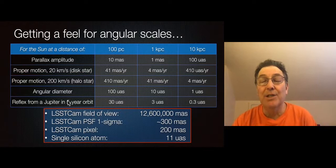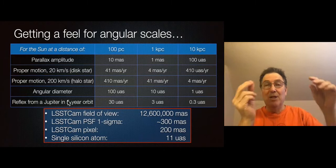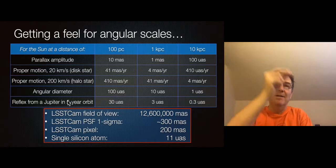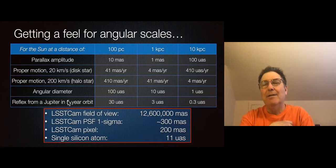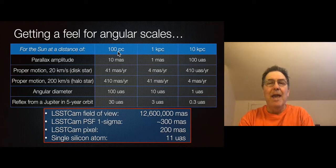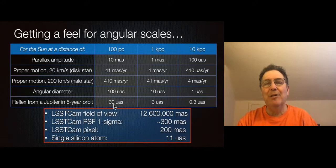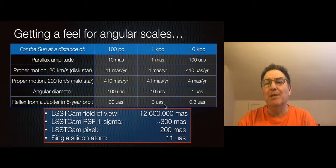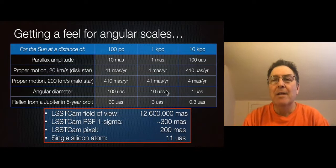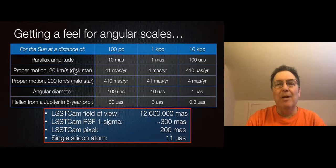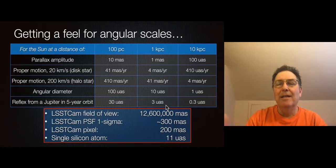There's one other enticing science target for precision astrometry: detecting extrasolar planets by the wobble they induce on their host stars. A Jupiter-mass planet around a solar-type star at 100 parsecs, in a 5-year orbit, would cause a stellar wobble of just 30 micro-arcseconds — less than the star's actual diameter. So extrasolar planet hunting with astrometry requires reaching the micro-arcsecond regime, while milli-arcseconds suffice for stellar dynamics.